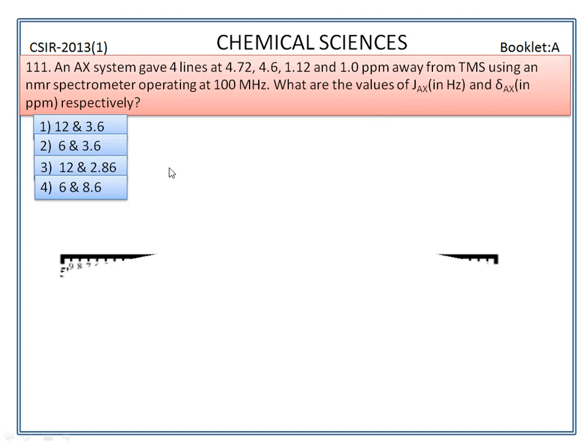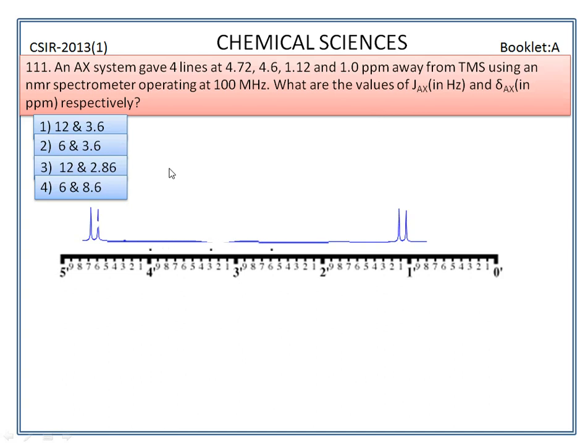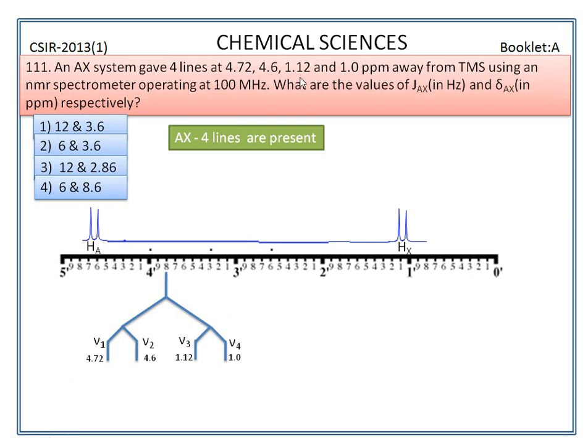This is the NMR spectrum of an AX system of the above given problem. It is the splitting of NMR A labelled as HA and this is the splitting of NMR X labelled as HX. An AX system having 4 lines. Doublets of each NMR is shown here. N1 equals 4.72, N2 equals 4.6, N3 equals 1.12 and N4 equals 1.0 ppm.